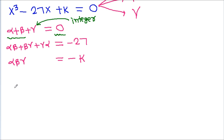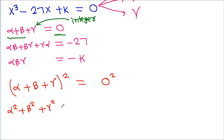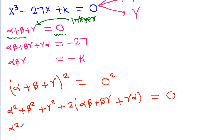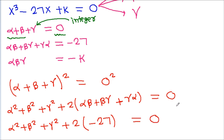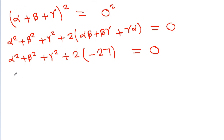We have alpha + beta + gamma = 0. If we square both sides, we get alpha² + beta² + gamma² + 2(alpha·beta + beta·gamma + gamma·alpha) = 0. Since alpha·beta + beta·gamma + gamma·alpha = -27, we get alpha² + beta² + gamma² = 2 × 27 = 54.